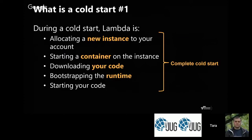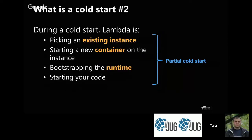A cold start involves allocating a new container instance, downloading your code, bootstrapping the runtime, and then starting. This happens whether you're using containers yourself or a function-as-a-service like Lambda. You typically experience the complete cold start the first time you run and in development, because your container hasn't warmed up yet. There's also a partial cold start — after you've started, your container is warm, and if you haven't changed anything, Lambda tries to pick an existing warm container.